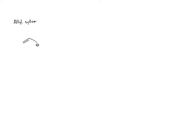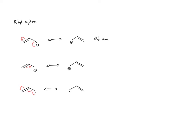The allyl system has conjugation spread out over three different atoms. There are three types of allyl systems: the allyl anion, the allyl cation, and the allyl radical. We can draw resonance forms for each of these using curly arrows to denote the flow of electrons. In the negatively charged system, electrons flow to give a pi bond on that side. In the allyl cation, electrons move to give positive charge on the left side. For the radical, we use fish hooks — singly headed arrows — to give the radical on the left side.